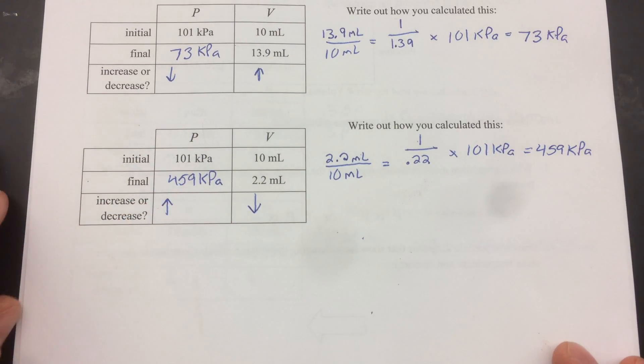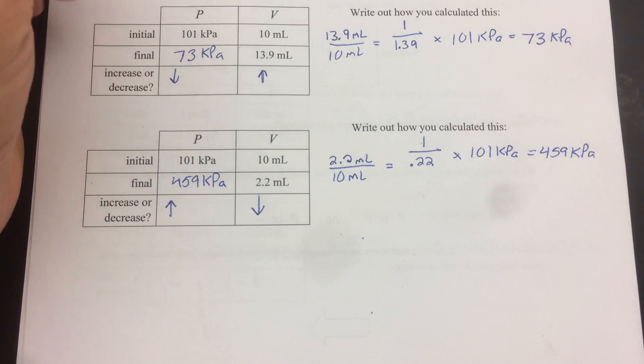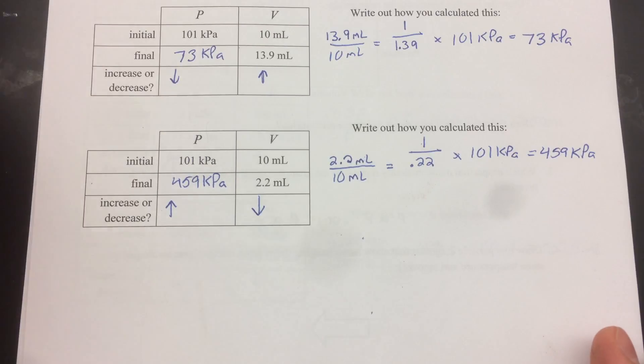So now when you do the other experiments, number 3 and number 4, these relationships are going to end up being either direct or inverse. And although the relationship has different variables, it's going to follow the same process that we did for number 1 or number 2, depending on what kind of relationship it is. So, if that's what you end up getting for the relationship, just look back to what you did in either number 1 or number 2 and follow the same process.